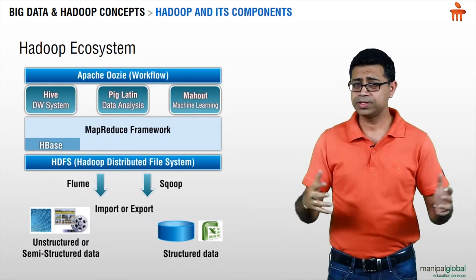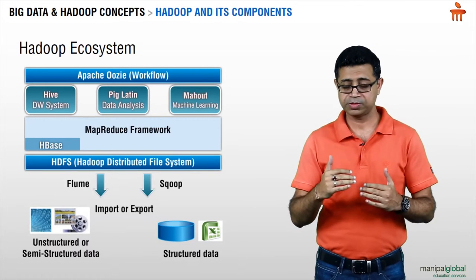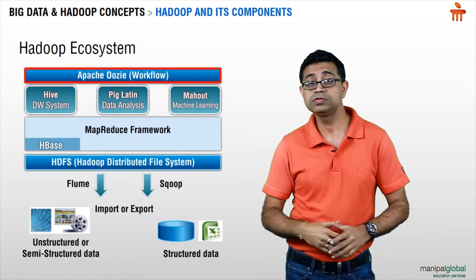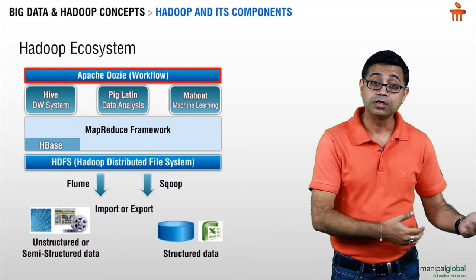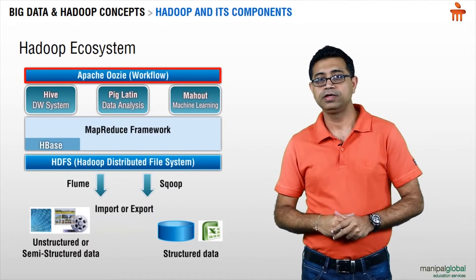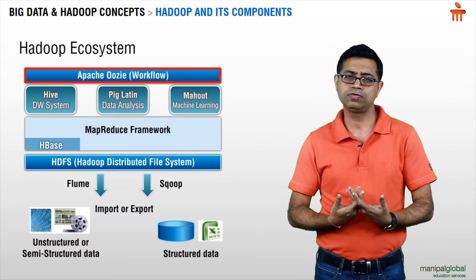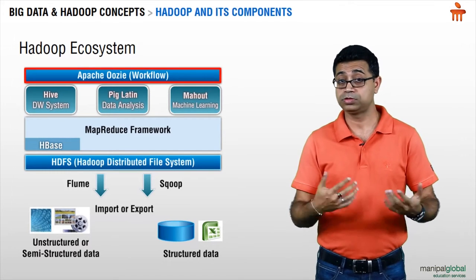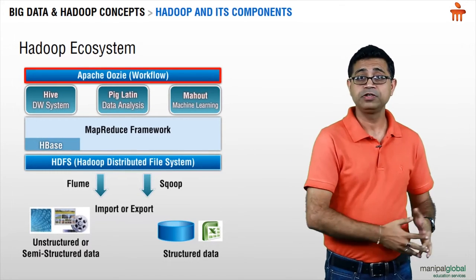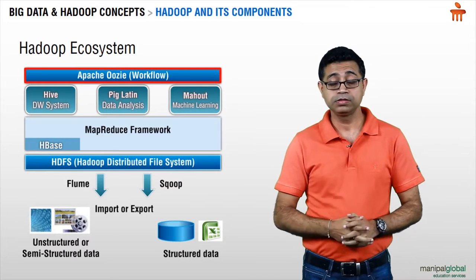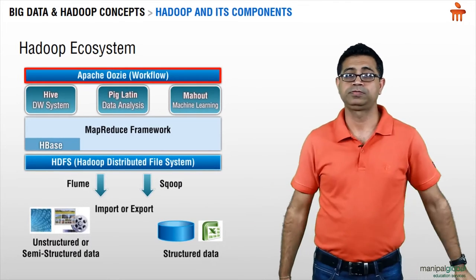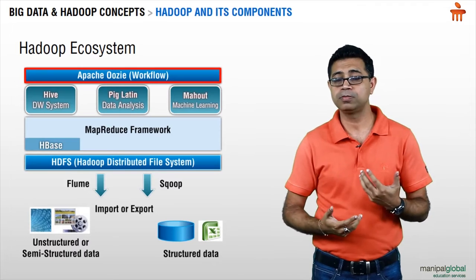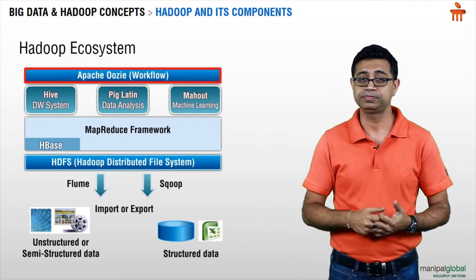These three components — Hive, Pig, and Mahout — are all built as a layer of abstraction on top of the underlying MapReduce and HDFS. Then you've got Apache Oozie, which is more like a workflow. If you're coming from a Unix background, you might have used cron jobs. Oozie does something similar: it helps you start jobs, stop jobs, and run jobs at a specified interval of time — but in the Hadoop world. It helps you schedule your MapReduce job, your Hive job, your Pig job, and your Mahout job at a specified interval of time.